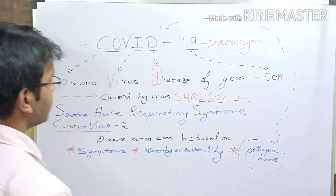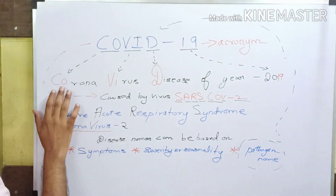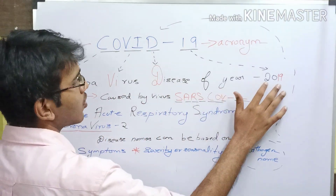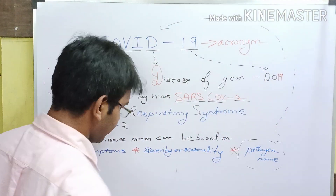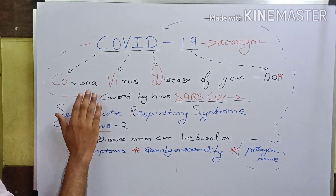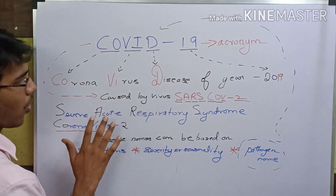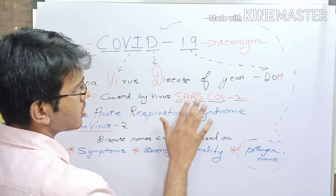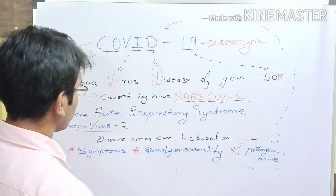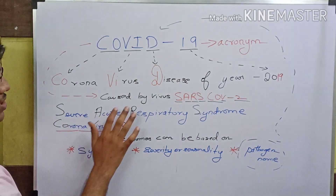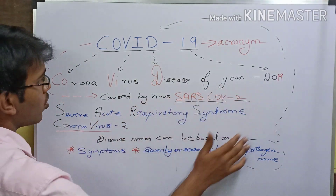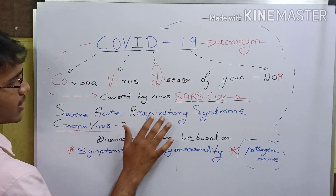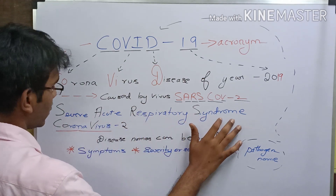COVID-19 is an acronym of Coronavirus Disease of the year 2019. This disease is caused by a virus named SARS-CoV-2. SARS-CoV-2 is an acronym of Severe Acute Respiratory Syndrome Coronavirus 2.